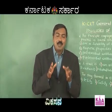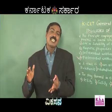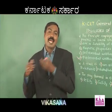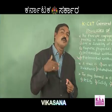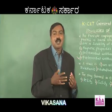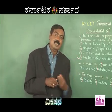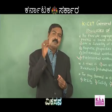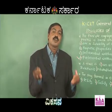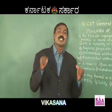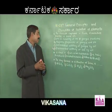Flux plus gangue is equal to slag. You may ask: already we have removed the impurities by concentration, so then what is this? There may be some minute impurities which were not eliminated by the concentration process, so we require a flux.